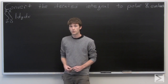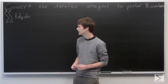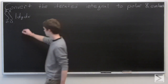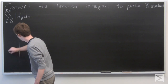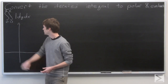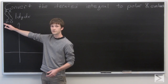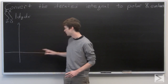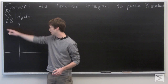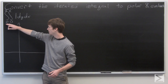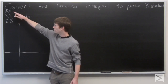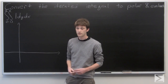First we want to convert this into polar coordinates. The best way to do that is to sketch a graph of our region. Our x value is ranging from 0 to 2, so we're going to be on the right-hand side of our axis. And then our y value is ranging from 0 to x, so we're going to be in the top right, below the equation y equals x.